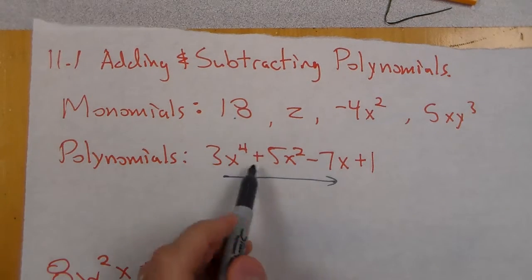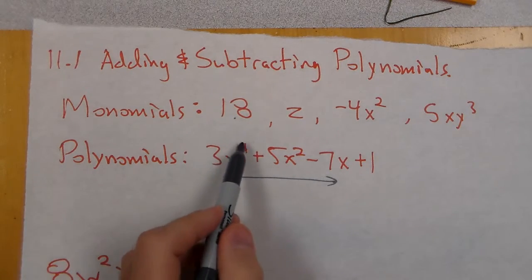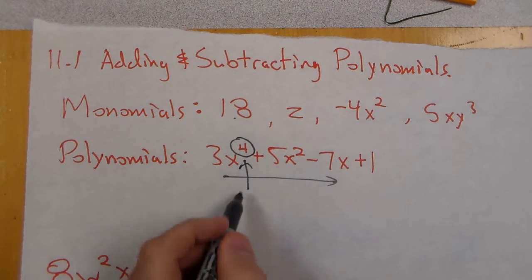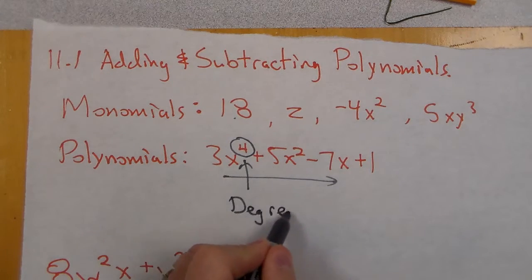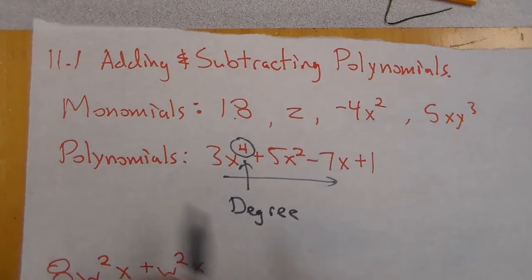Now if I had x to the third in there I'd put it in there as well. The fourth is the highest exponent, we're going to call that the degree. So it's a fourth degree polynomial.